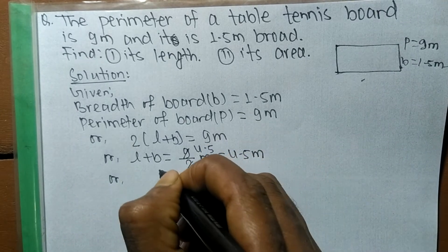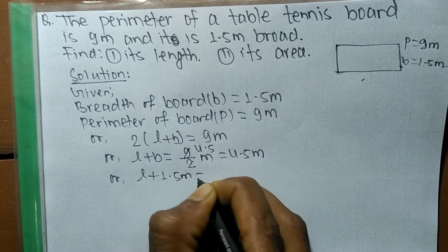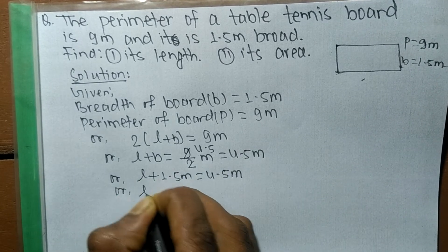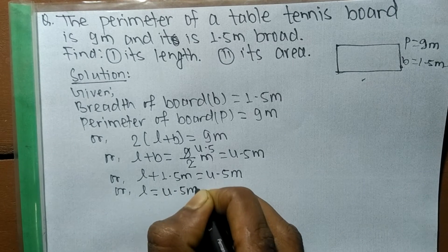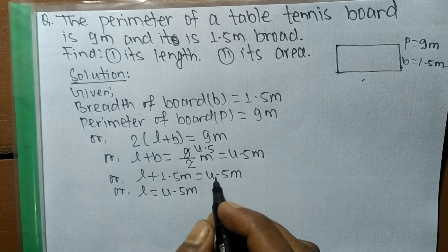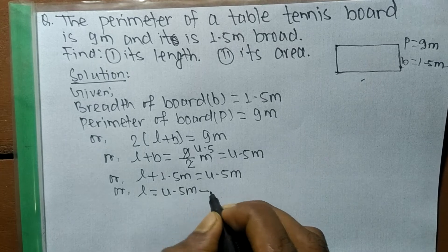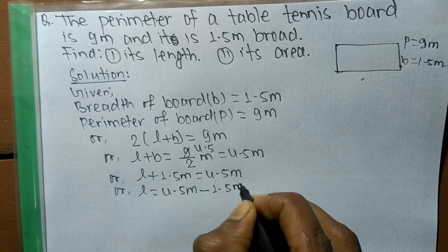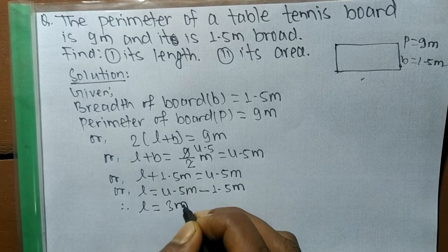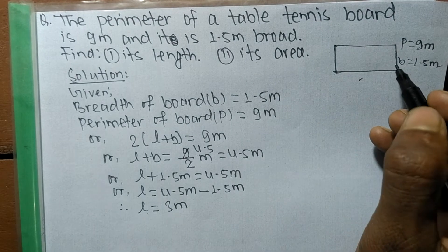The value of breadth b is 1.5, so l plus 1.5 equals 4.5 meters. Therefore l equals 4.5 minus 1.5, which gives us l equals 3.5 meters. So we have found the length of the table tennis board, which is 3.5 meters.